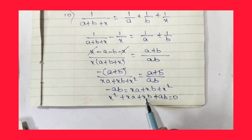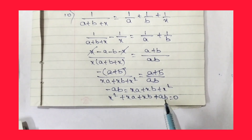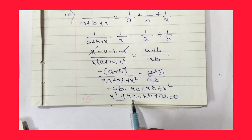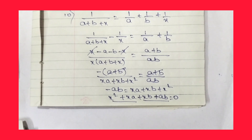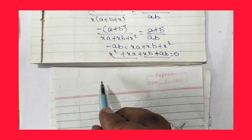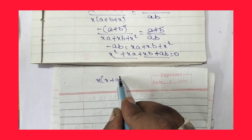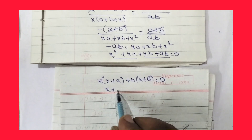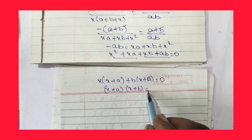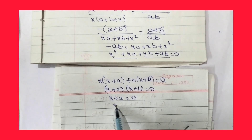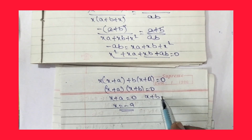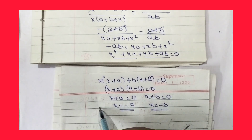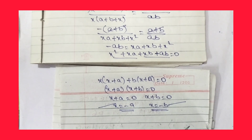Rearranging: x² + xa + xb + ab = 0. Grouping: x(x + a) + b(x + a) = 0, so (x + a)(x + b) = 0. Therefore x + a = 0 gives x = -a, and x + b = 0 gives x = -b. So x = -a or x = -b. By this we have successfully solved all the questions related to unit test paper number 3.